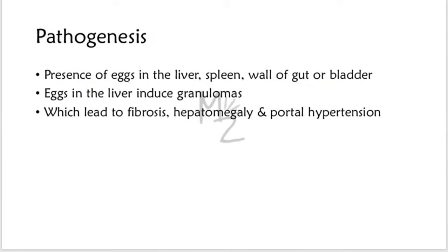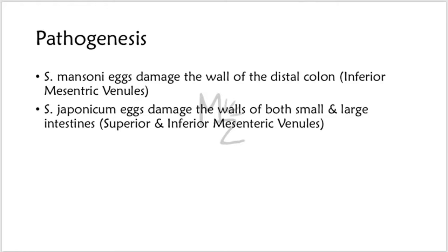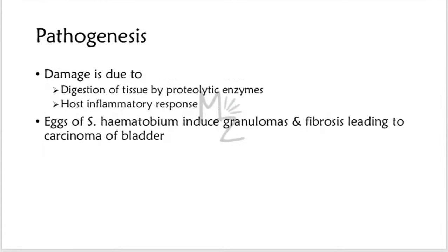Most pathologic findings are caused by the presence of eggs in the liver, spleen, or wall of the gut or bladder. Eggs in the liver induce granulomas, which lead to fibrosis, hepatomegaly, and portal hypertension. Granulomas form in response to antigens secreted by the eggs; hepatocytes are usually undamaged and liver function tests (LFTs) remain normal. Portal hypertension leads to splenomegaly. S. mansoni eggs damage the wall of the distal colon (inferior mesenteric venules), whereas S. japonicum eggs damage the walls of both small and large intestines. S. haematobium eggs in the wall of the bladder induce granulomas and fibrosis, which can lead to carcinoma of the bladder.